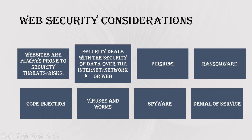It might be in a particular network or through a website or through the internet. There are some basic threats that are happening on the web. Basic threats include phishing, pharming, ransomware, spyware, viruses and worms, code injection, and denial of services. These are some basic threats that we can come across when using some websites.